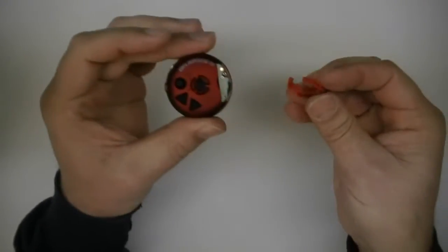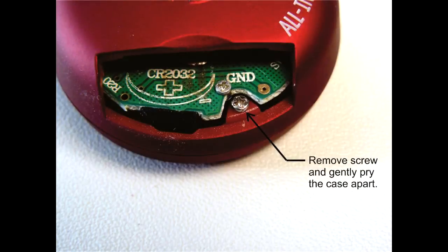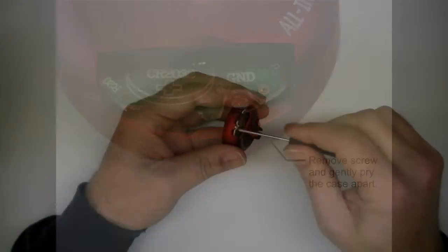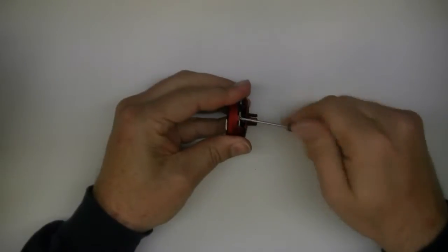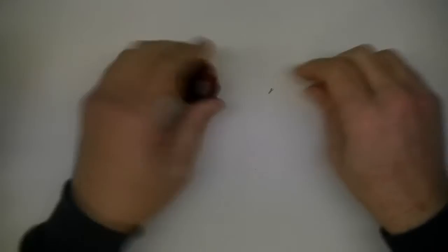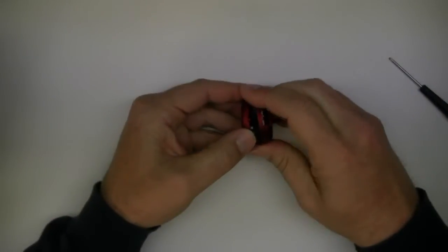First step is to disassemble the tuner. Basically remove the clip-on and then undo the screw and carefully pry the two pieces apart.